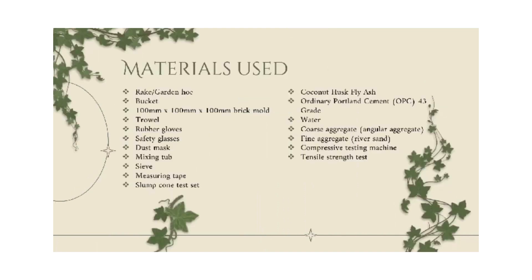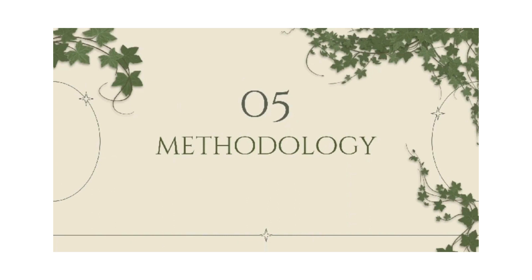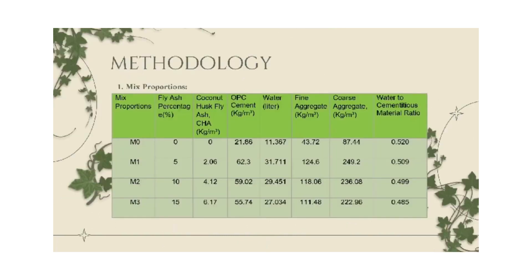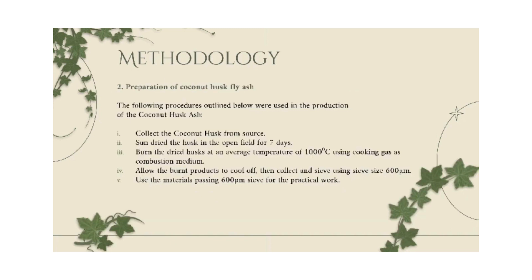This study required ordinary Portland cement 43 grade, coconut husk fly ash, water, coarse aggregate, fine aggregate, and others. The mix proportion table shows the percentage of fly ash used in the studies. Four sets of mixed proportions are prepared. The first is a control mix without fly ash, while other mixes contain coconut husk fly ash as partial replacement of cement at 0%, 5%, 10%, and 15%.